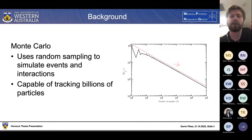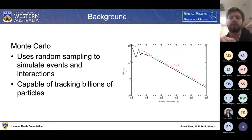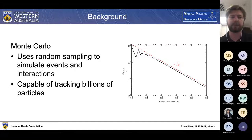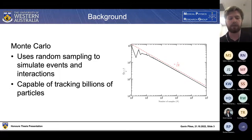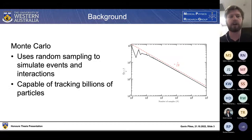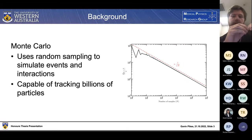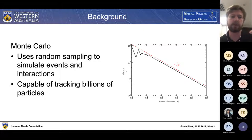Beginning with the Monte Carlo method: Monte Carlo simulations use random sampling to simulate events and interactions. Rather than solving complex multi-dimensional integrated differential equations, we can instead use random sampling to track particles as they move through a medium, assigning a probability from a random number generator to determine the probability of an interaction.